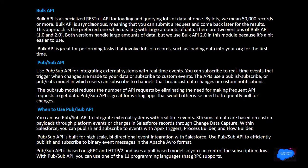Bulk API is a specialized REST API for loading and querying large amounts of data at once — meaning 50,000 records or more. Bulk API is asynchronous, meaning you can submit a request and come back later for the result. This is the preferred approach when dealing with large amounts of data. There are two versions of Bulk API, 1.0 and 2.0. Both handle large amounts of data, but Bulk API 2.0 is recommended because it is easier to use. It is great for loading data into the org for the first time.